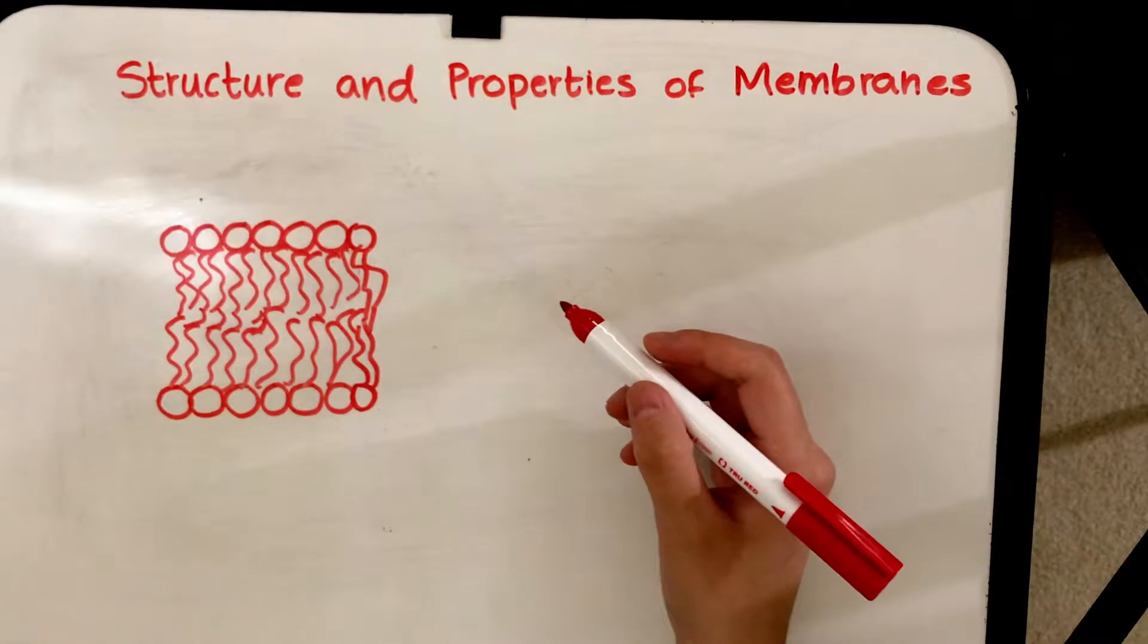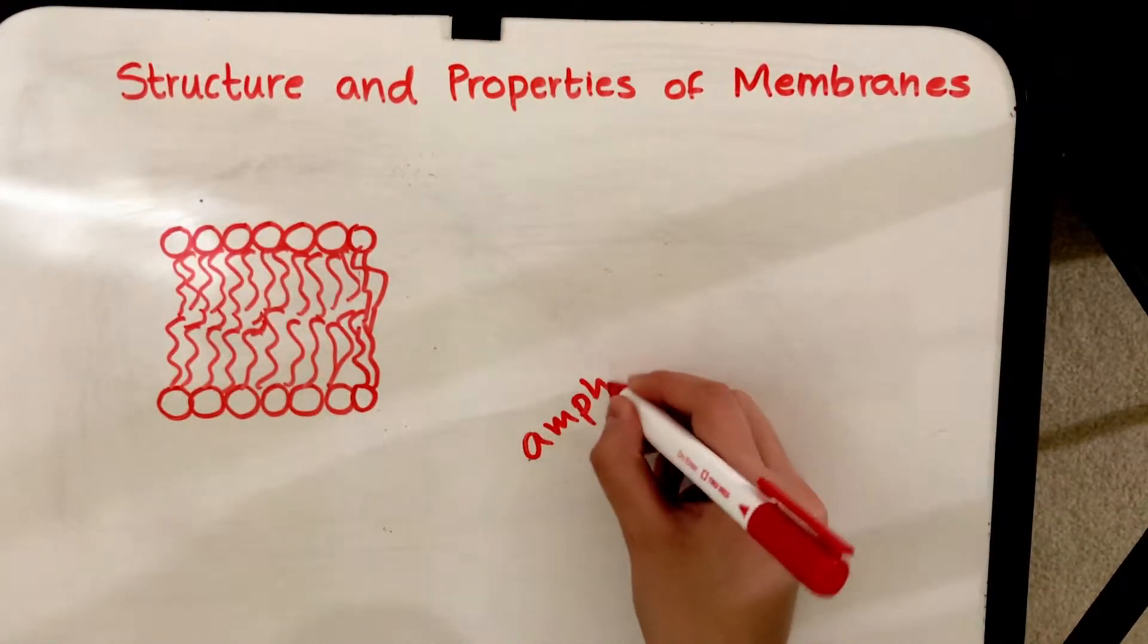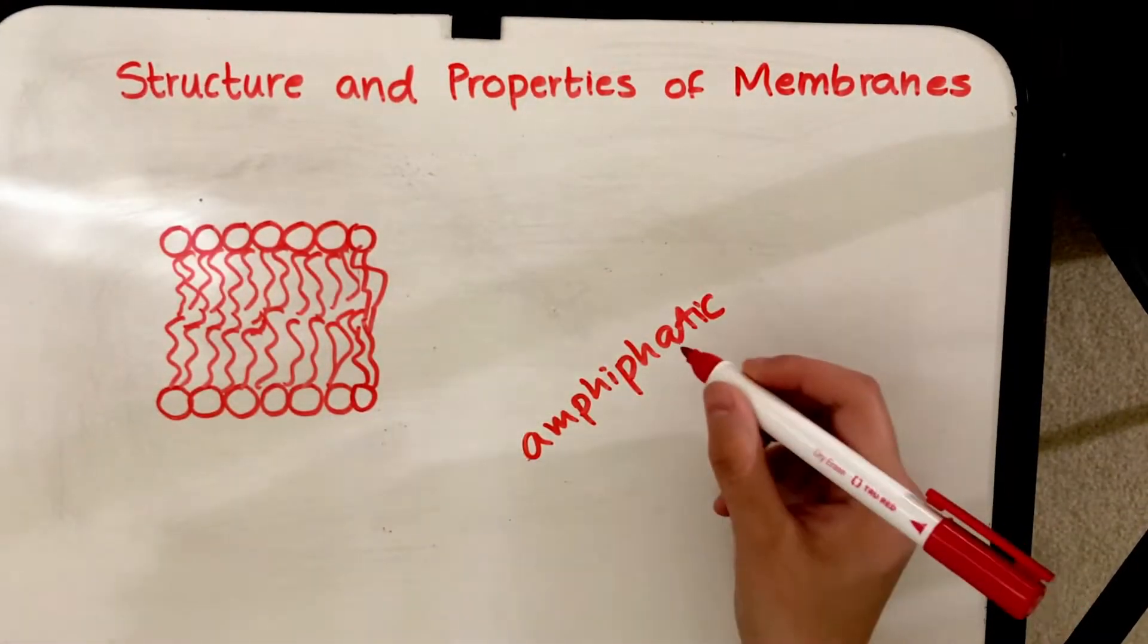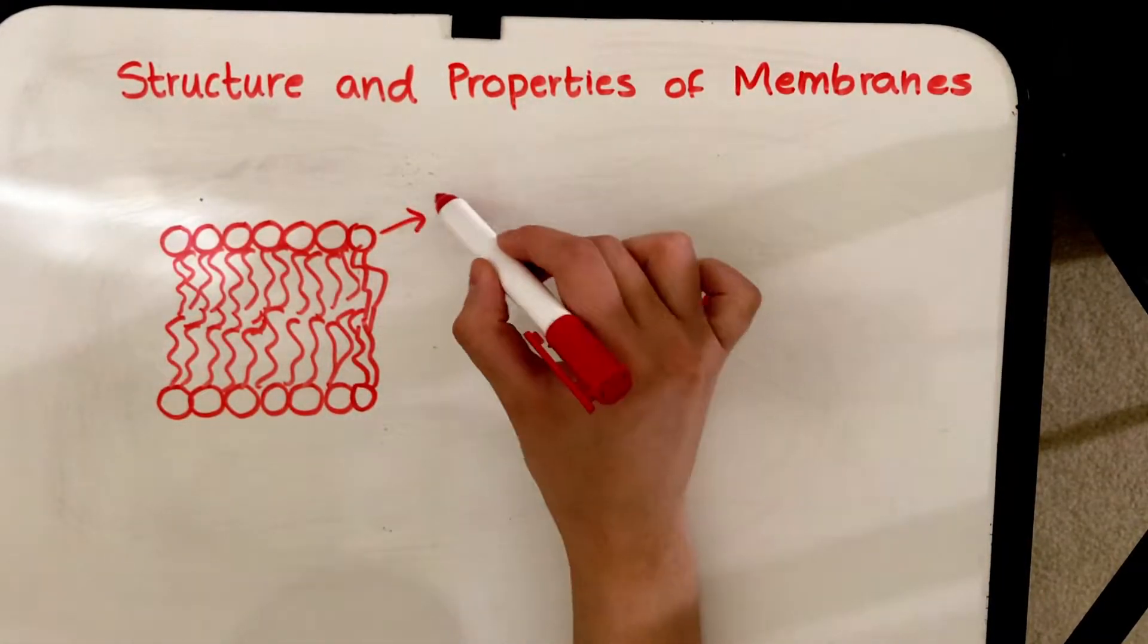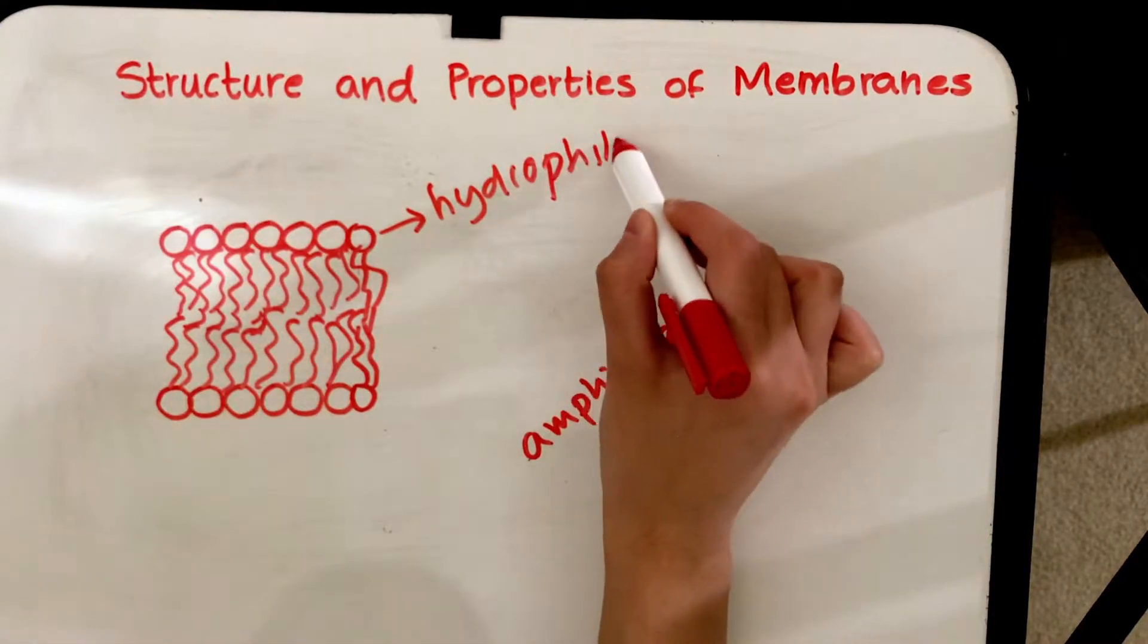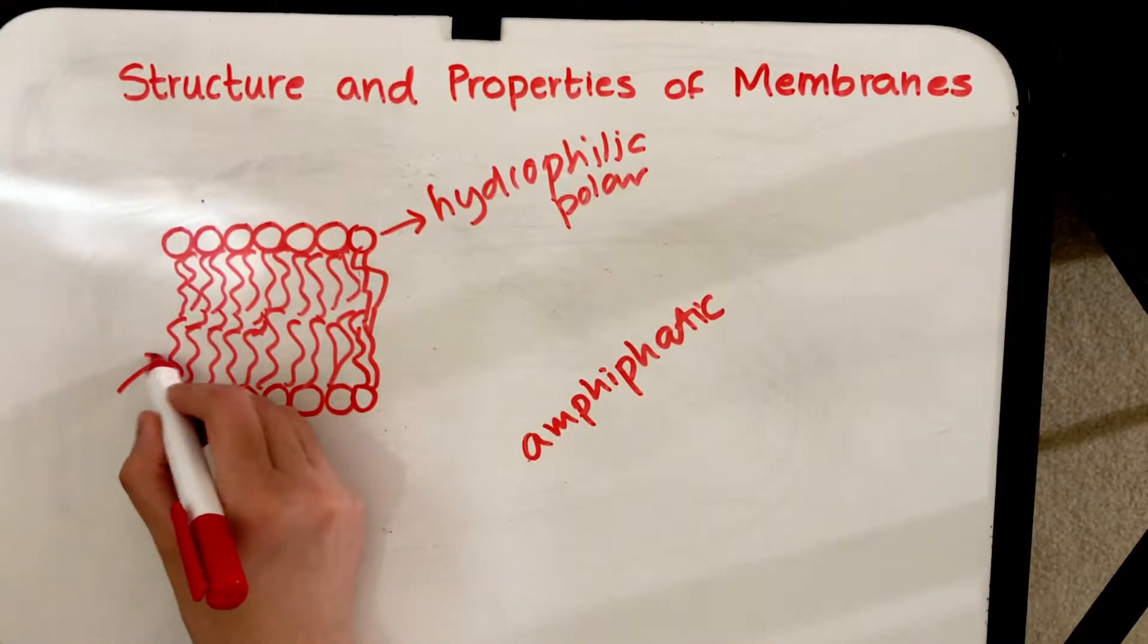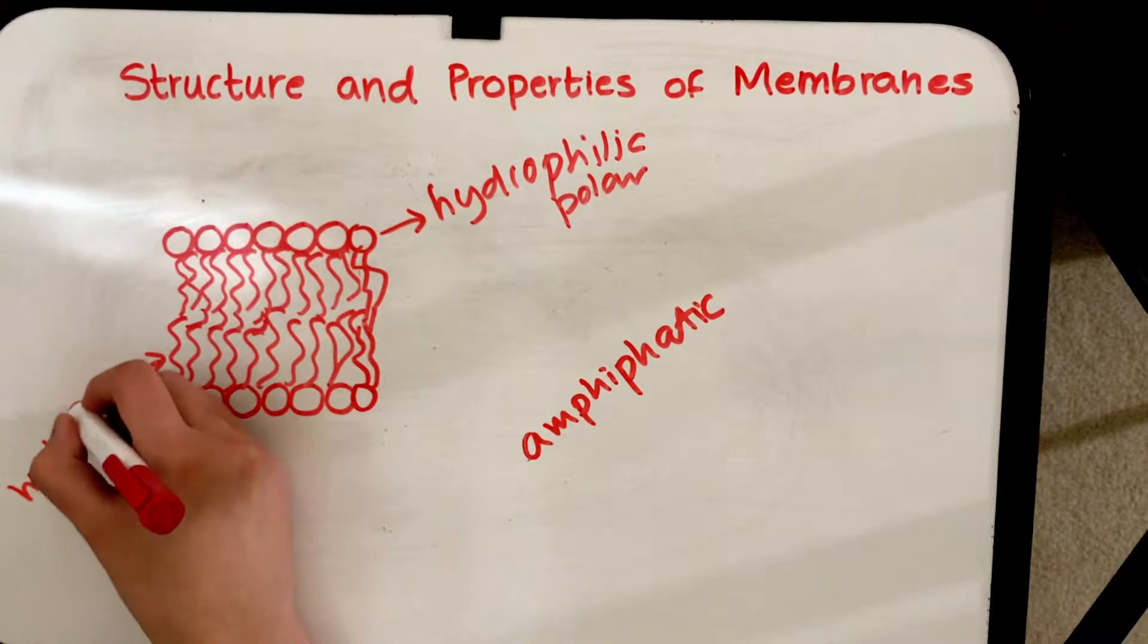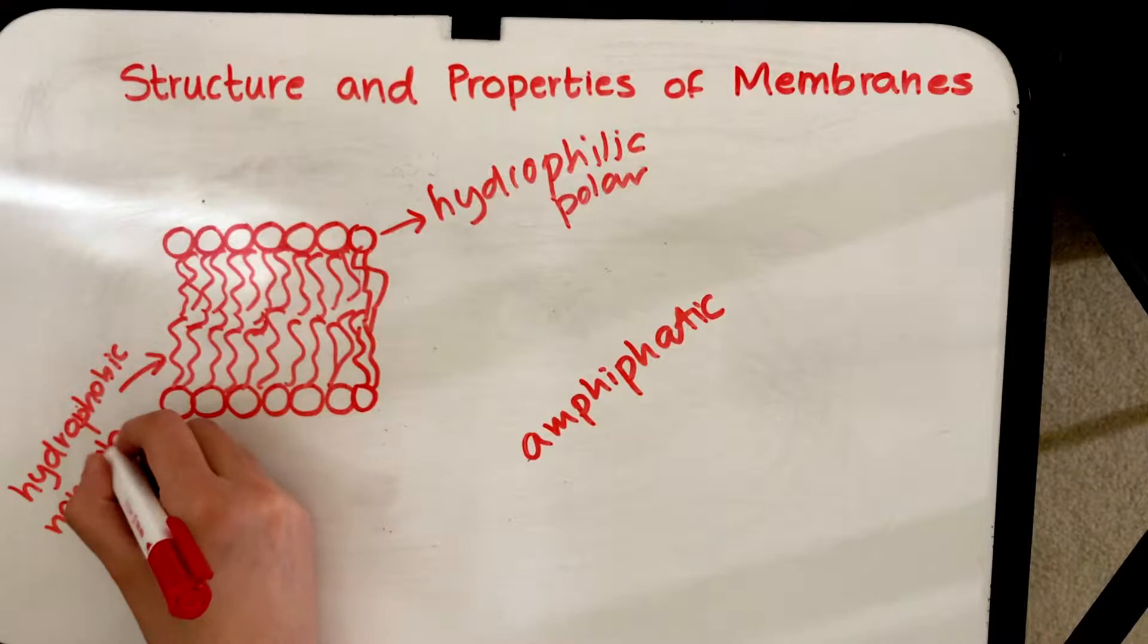The structure is amphipathic. This means that it is composed of both a hydrophilic polar head and a hydrophobic nonpolar fatty acid tail.